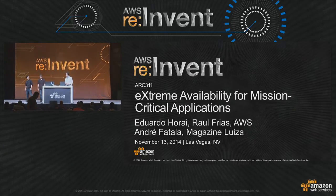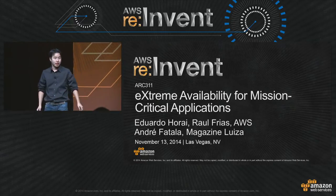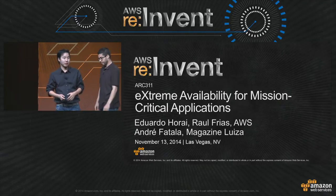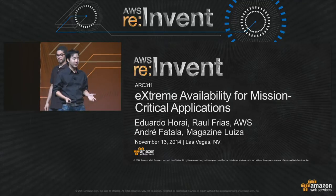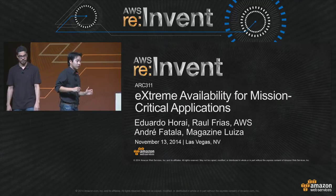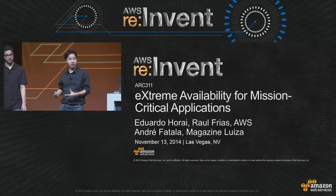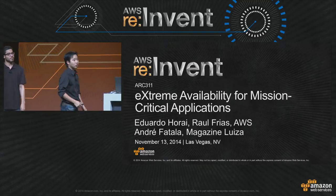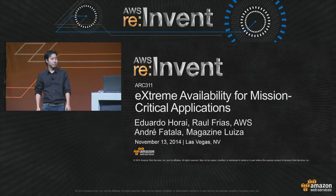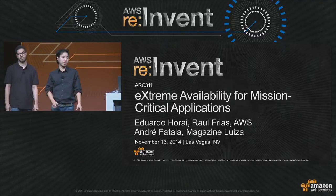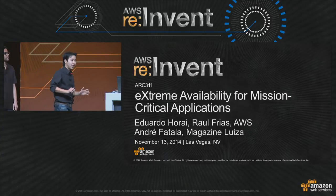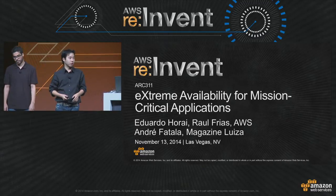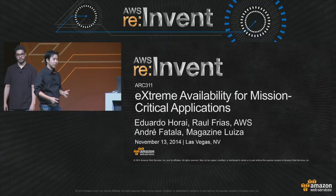Welcome, everyone. Today we're going to present a concept that we call extreme availability, or simply XA. We're going to see a lot of services and architectures based mainly on EC2, ELB, Elastic Beanstalk, RDS, DynamoDB, and Route 53. It's a lot of services, so we won't have time to dive deep on all of them, but we'll provide some architecture guidance for you to start achieving XA using these services.